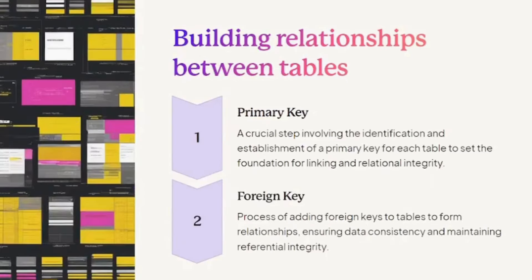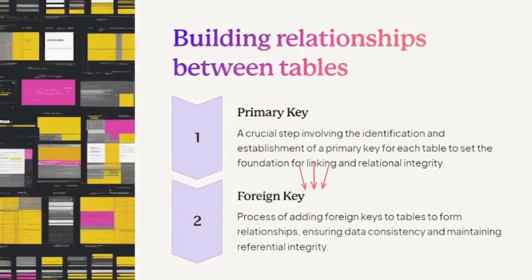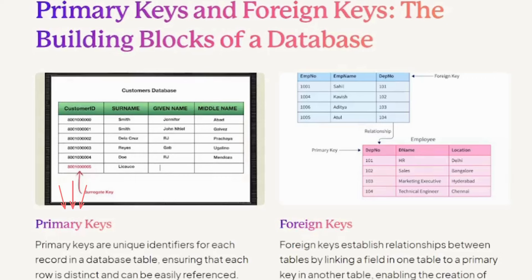Building Relationships Between Tables. A crucial step involves the identification and establishment of a primary key for each table to set the foundation for linking and relational integrity. The process of adding foreign keys to tables forms relationships, ensuring data consistency and maintaining referential integrity. Primary keys and foreign keys are the building blocks of a database.